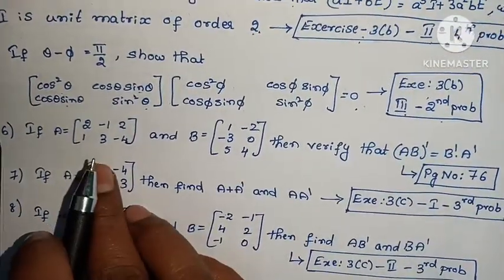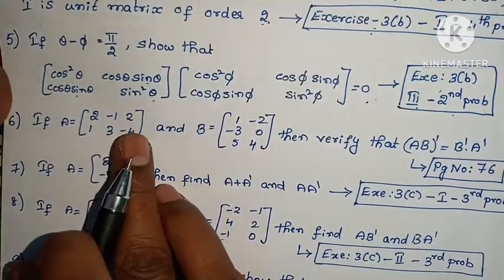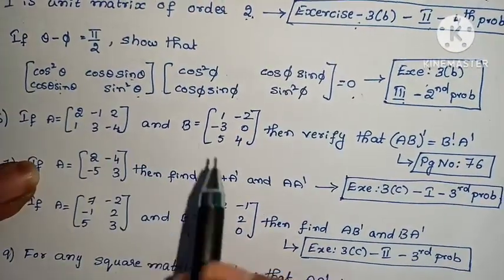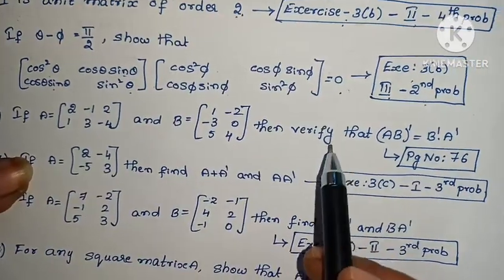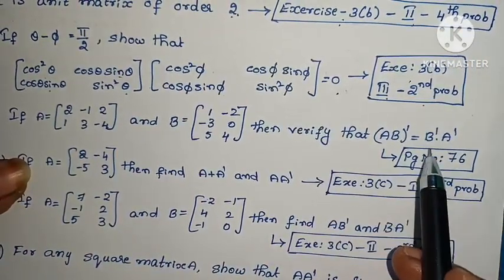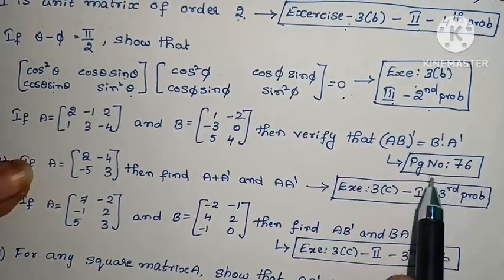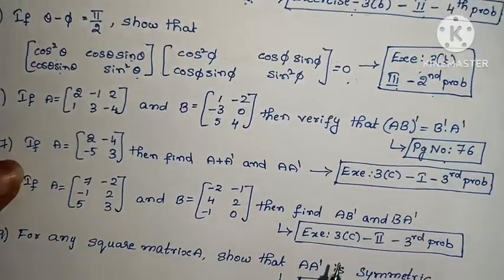Sixth one: if A equals to [2, -1, 2; 1, 3, -4], and B equals to [1, -2, -3; 0, 5, 4], then verify (AB)ᵀ = BᵀAᵀ. Page number 76, example problem.